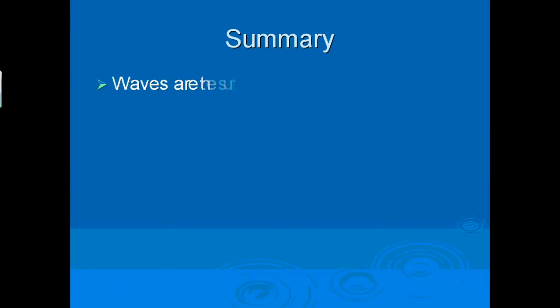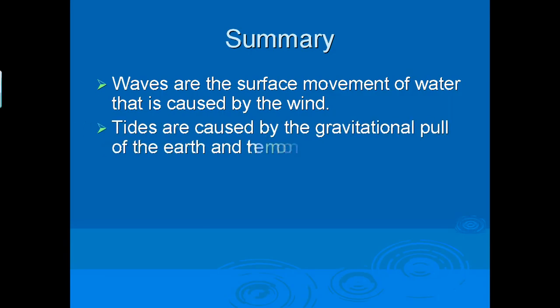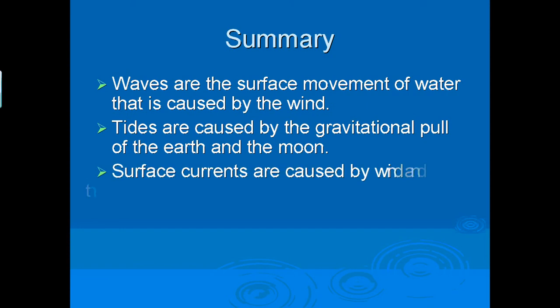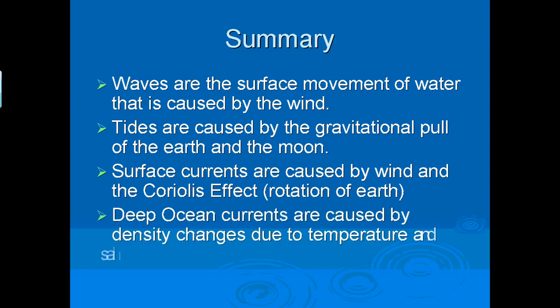To sum up this lesson, you need to know that waves are the surface movement of water that are caused by wind. Tides are caused by the gravitational pull of the Earth and the Moon. Surface currents are caused by wind and the Coriolis effect, which is simply the rotation of Earth. And deep ocean currents are caused by the density changes due to temperature of the water and salinity.